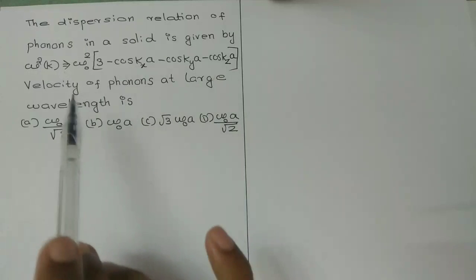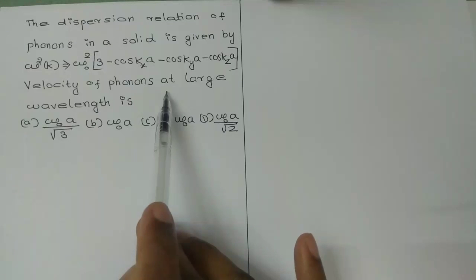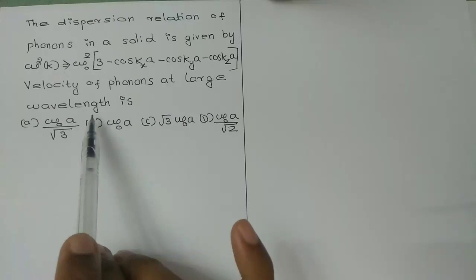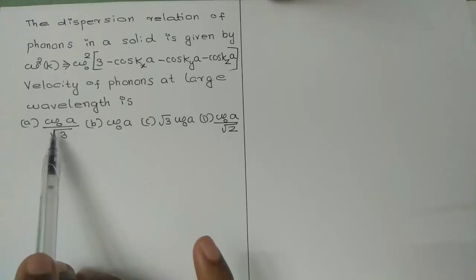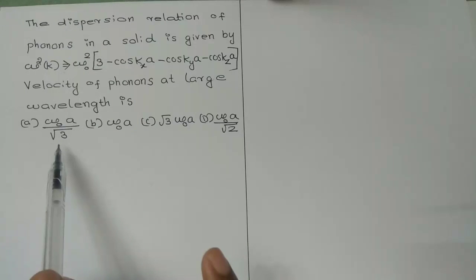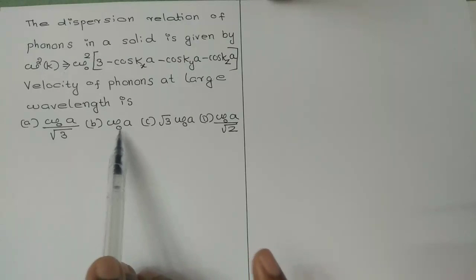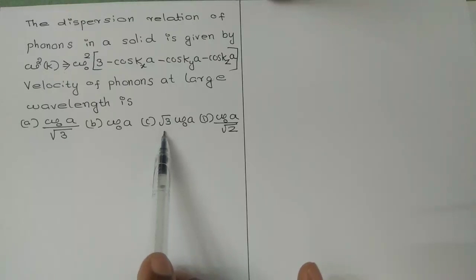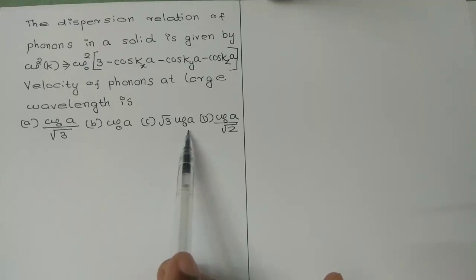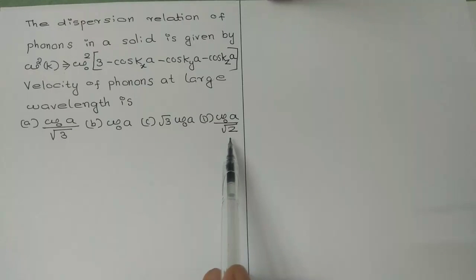Find the group velocity of phonons at large wavelength. Option A: omega_0 A divided by root 3. Option B: omega_0 A. Option C: root 3 times omega_0 A. Option D: omega_0 A divided by root 2.